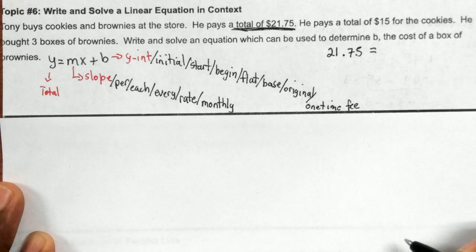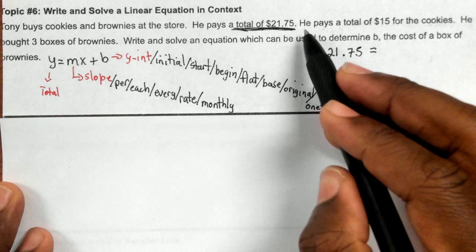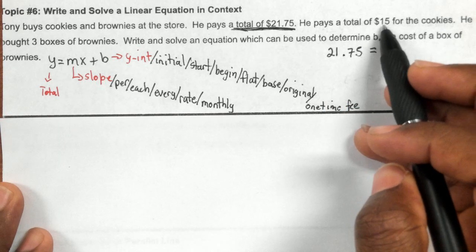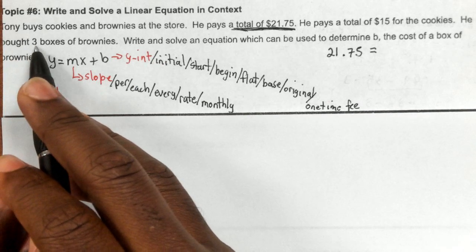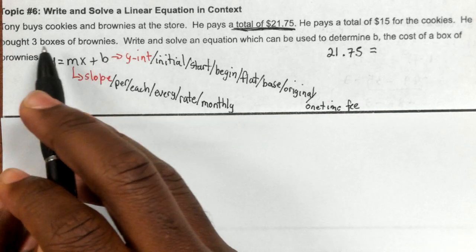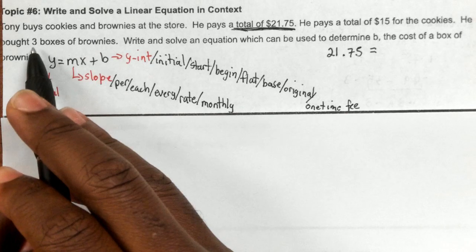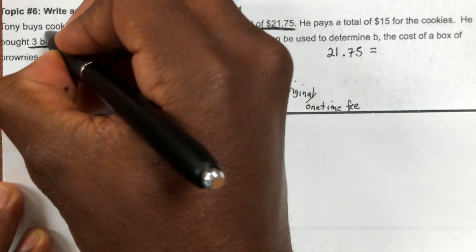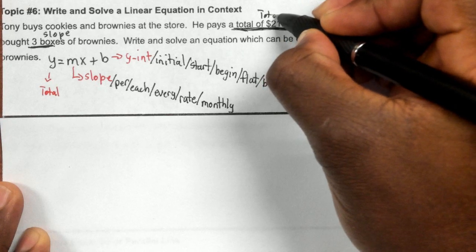Now I'm going to identify my slope. It says he pays a total of 15 for cookies. We know that this was not a total because it was not the largest number. He bought three boxes of brownies, so each set of brownies he bought three of them. So in this case, this is representing your slope.